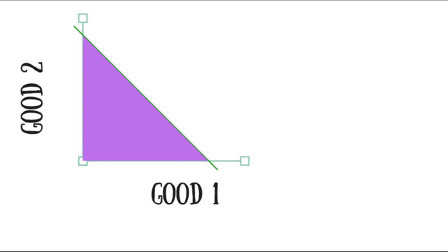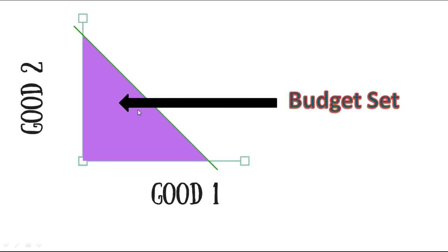This is the graph of the budget set. You have two goods: good one on the X-axis and good two on the Y-axis. The downward-sloping line represents your income line. You cannot consume beyond this line — you can consume equal to or less than this. The shaded portion represents the budget set. This is how we draw the budget set on a graph.